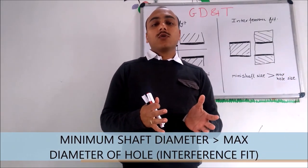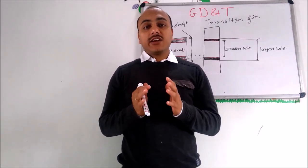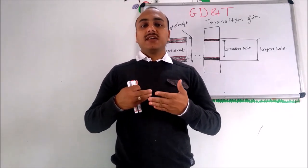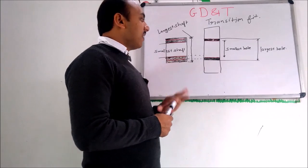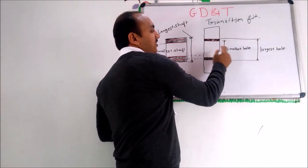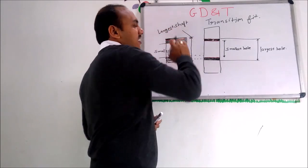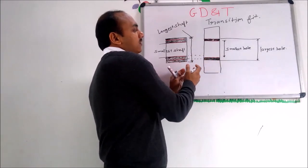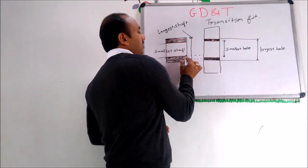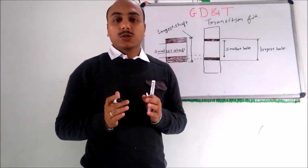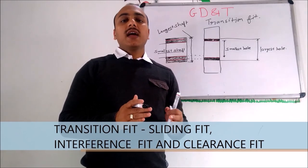In a transition fit, we can get a sliding fit, interference fit, or clearance fit depending on the actual manufactured sizes. If the hole is at its smallest limit and the shaft is at its largest, we get interference; in other combinations we can get clearance or sliding fit. So in a transition fit, all three conditions — sliding fit, interference fit, and clearance fit — are possible.